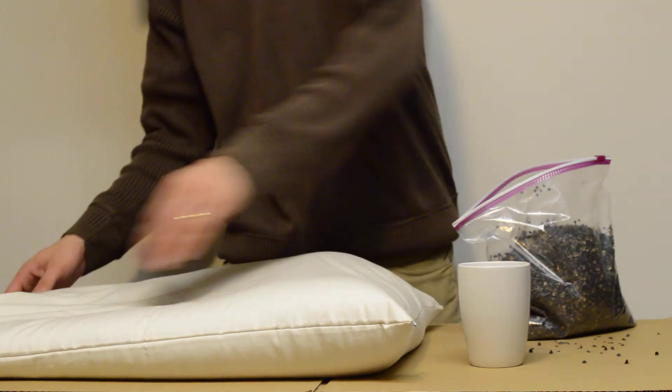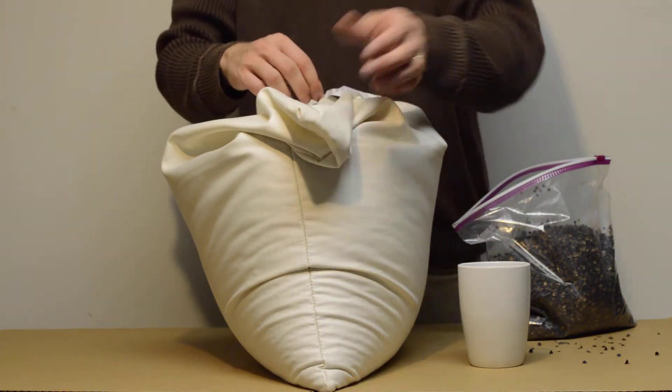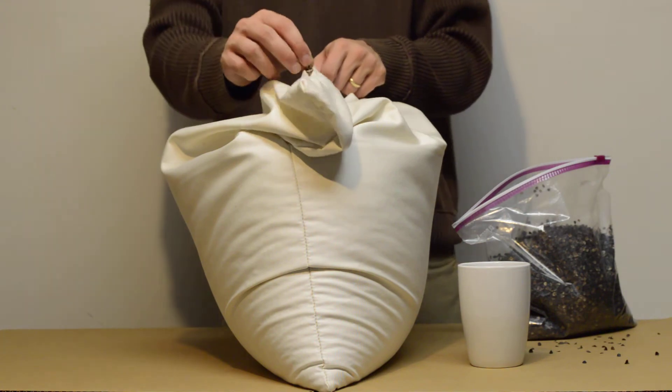If you need to take out more hulls, you simply place your pillow back with the zipper side up, carefully open, and remove more hulls as needed.